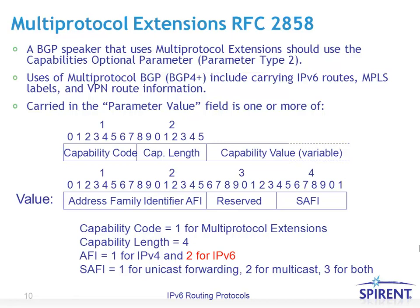A BGP speaker uses multi-protocol extensions with optional parameter type two. Usage of multi-protocol BGP, often referred to as BGP4+, includes carrying IPv6 routes, MPLS labels, and possibly other VPN virtual private network route information. The parameter value field contains one or more capability/value combinations. Capability code equals one for multi-protocol extensions, capability length equals four, and the value contains an AFI (address family indicator) and sub-AFI field. The AFI is set to 2 for IPv6 as opposed to 1 for IPv4, and the sub-address family indicates whether it is used for unicast, multicast, or both types of prefixes.